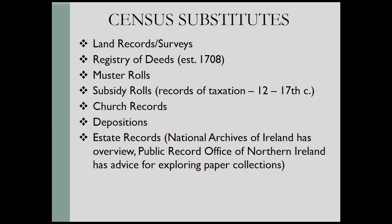Census substitutes include land records and land surveys, deeds, muster rolls, subsidy rolls or records of taxation going back as far as the 12th century, church records, and depositions — maybe the landowner or your ancestor had to go to court for some reason and you might find a mention in a deposition. The National Archives of Ireland and the Public Record Office of Northern Ireland — called PRONI — have advice for exploring paper collections. Remember that not everything is online, but a lot of these locations do have free services, so if there's a particular document you're looking for, you can always contact them and request it.